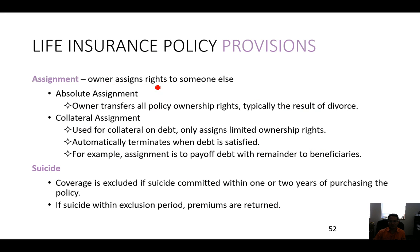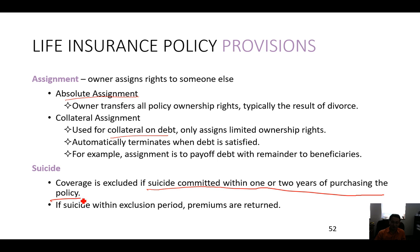When an owner assigns rights to someone else, you have absolute assignment — transferring all policy rights, typically the result of a divorce — or collateral assignment, used as collateral on a loan, where you can use your whole life insurance as collateral. Suicide coverage is excluded if suicide is committed within one or two years of purchasing the policy; within the exclusion period, premiums are returned.